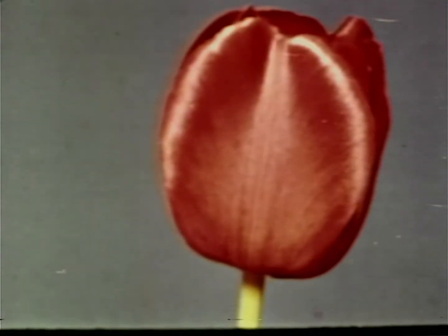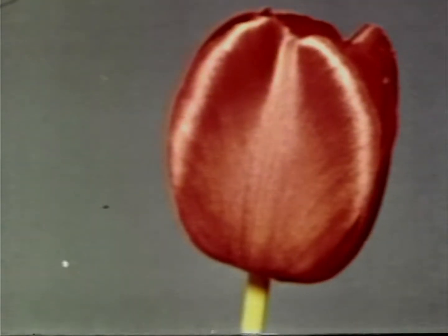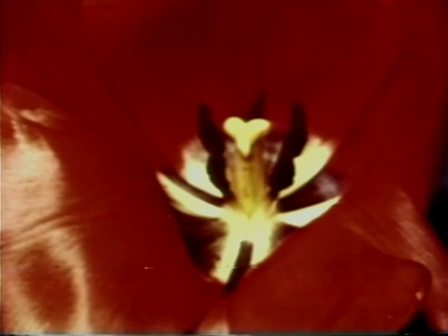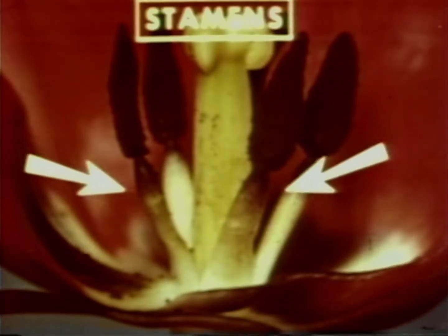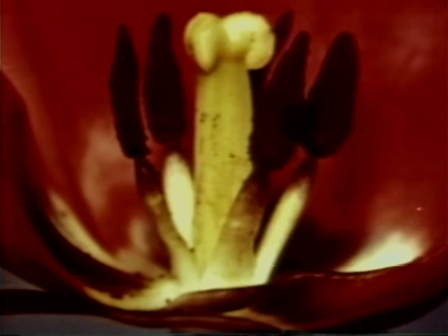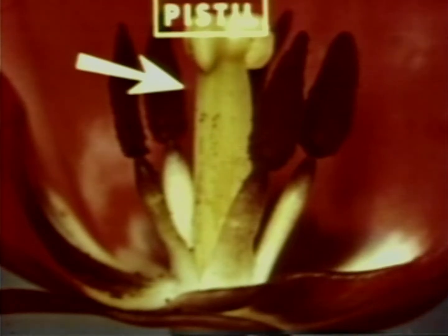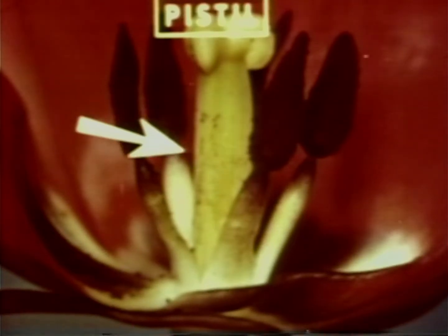A flower is a highly specialized part of a plant. Inside are the reproductive organs, the male and the female parts of the plant. The male parts are called stamens and they surround the pistil, which is the female part of the plant.